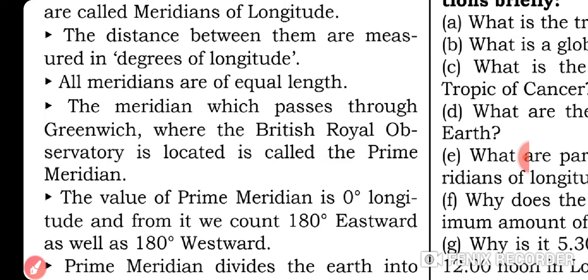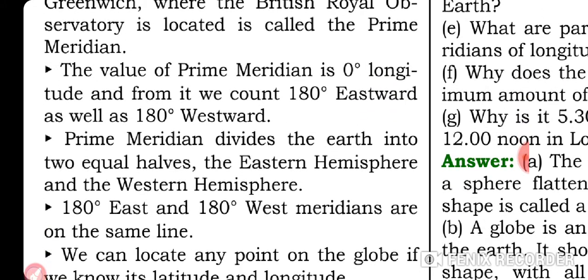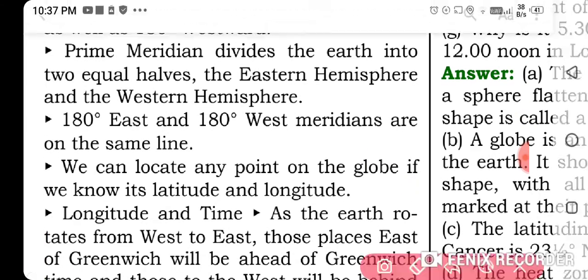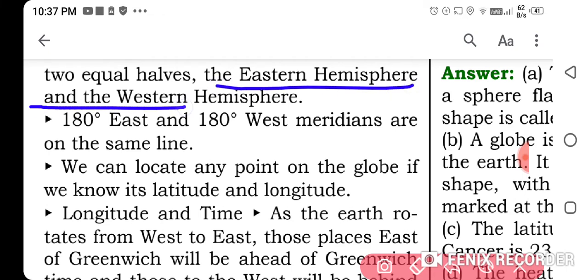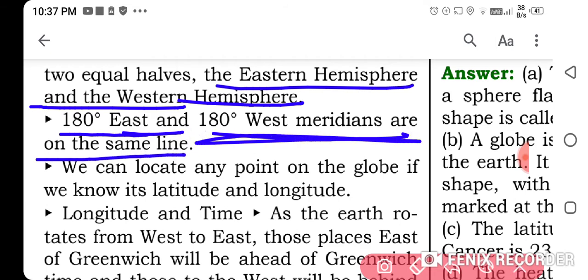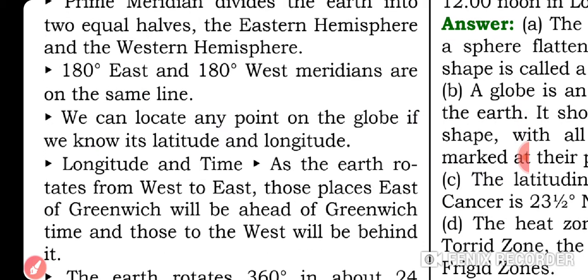The Prime Meridian divides our Earth into two equal parts as longitude. Its value is zero degrees — the same starting value as the equator. From the Prime Meridian, we count 180° eastward as well as 180° westward. This divides the Earth into the Eastern Hemisphere and the Western Hemisphere.